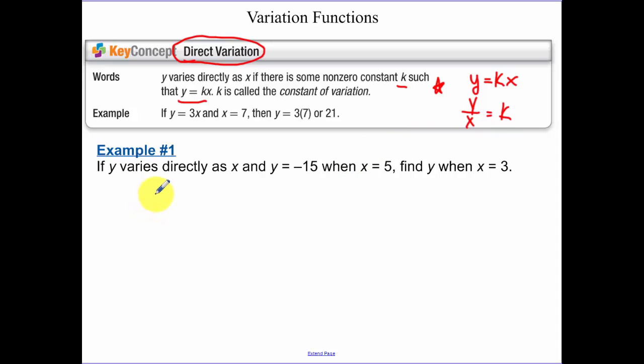So if y is varying directly as x, and y equals negative 15 when x equals 5, therefore I know that negative 15 equals k times 5, which is x. Solving for k, we get negative 3. So our general variation function is y equals negative 3x.